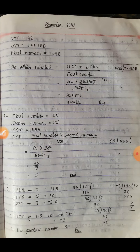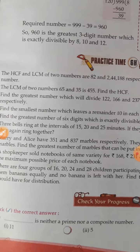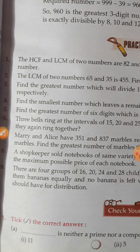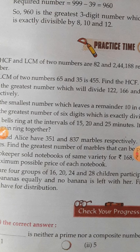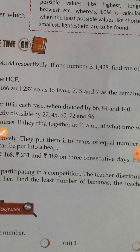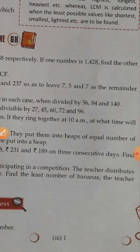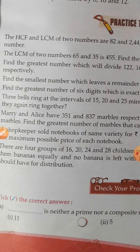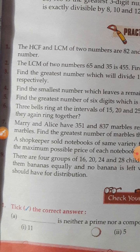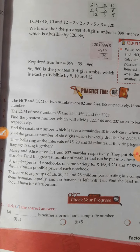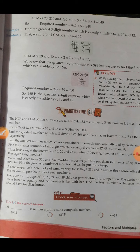Question number 6: Three bells ring at intervals of 15, 20, and 25 minutes. If they ring together at 10 a.m., at what time will they again ring together? जब bells के एक साथ ring होने का time पूछे, तो पहले LCM find करते हैं।